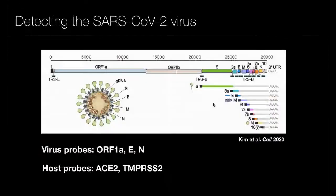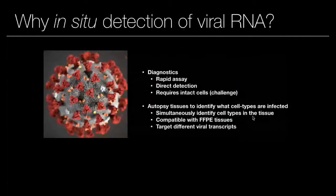When designing probes for the SARS-CoV-2 virus, we designed probes all the way down to the ORF1A region of the virus so that we could specifically target the full-length viral transcript. We also designed probes to the N and the E genes, which would capture the full-length transcript, as well as probes targeting the subgenomic RNAs made by the virus. In thinking about in-situ detection, we identified two specific applications for these technologies.